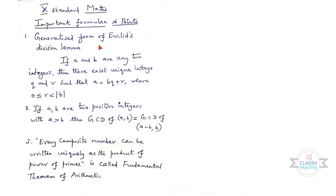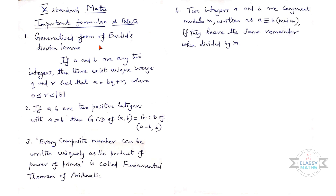Next important point: Every composite number can be written uniquely as the product of powers of primes. This is called the Fundamental Theorem of Arithmetic. This is also one of the theorems in Chapter 2.